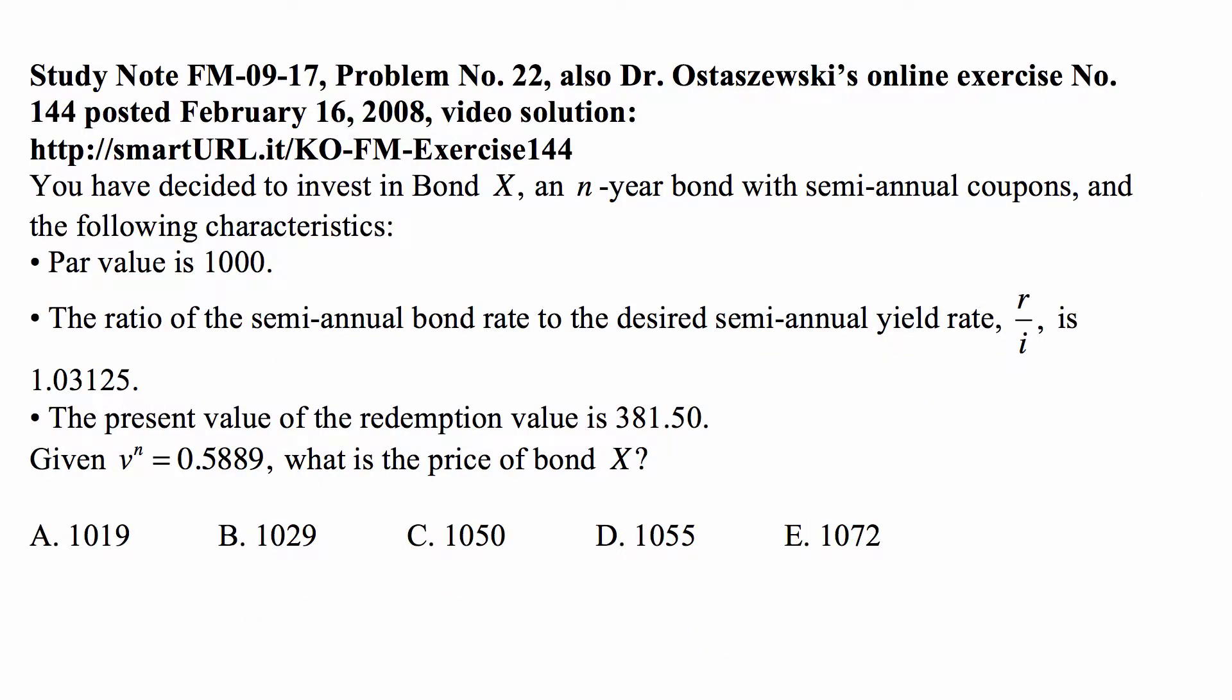Here's the problem for today for Exam FM. You have decided to invest in Bond X, an N-year bond with semi-annual coupons and the following characteristics. Par value is 1000.